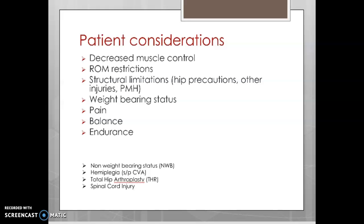As we're considering our patient and how we are going to help them move from one surface to another, we're going to look at the strength they have, their motor control and coordination, and any range of motion limitations. Sometimes after a surgery like a total hip replacement, they may have certain hip precautions. If they've had spine surgery or other conditions that may affect their ability to move, weight-bearing status, pain, balance, and endurance — often referred to as activity tolerance — will all be diminished for various reasons.